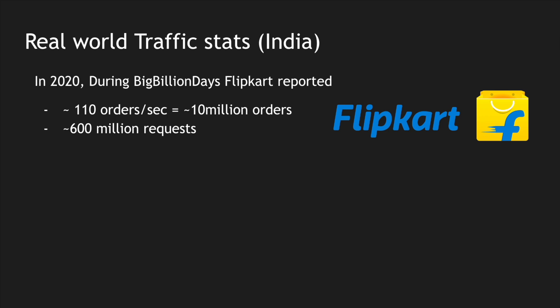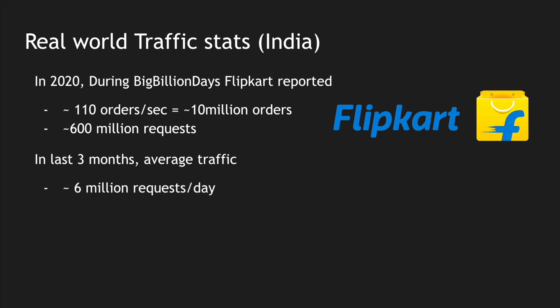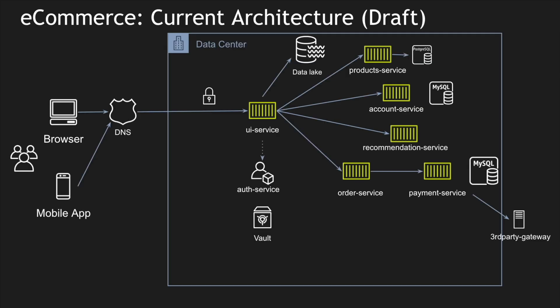During a flash sale, different offers are available on different products and people can buy at discounted prices. I took statistics from the last three months on how much traffic Flipkart gets daily and arrived at an average of 6 million requests per day. So to build a flash sale system, we first need an e-commerce platform that can handle at least 6 million requests per day. Rather than dumping a simple architecture, I want to concentrate on individual services.